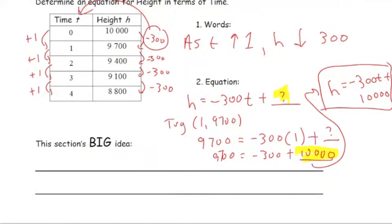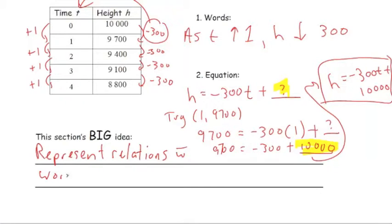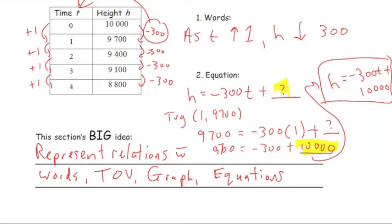The big idea in this section is that we represent relations with words, table of values, graphs, and equations. Hope that gets you started with Chapter 4, Linear Relations. Thanks for watching, and we'll see you soon.